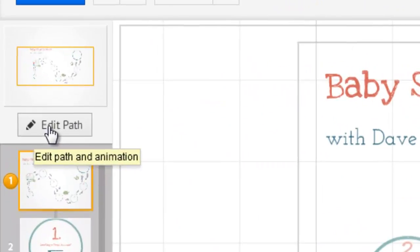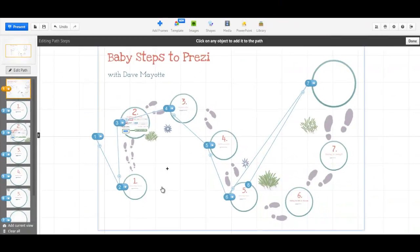The first way is to click the Edit Path button. This brings up what the path is at that time. You can see what's first, second, third, fourth, and so on.